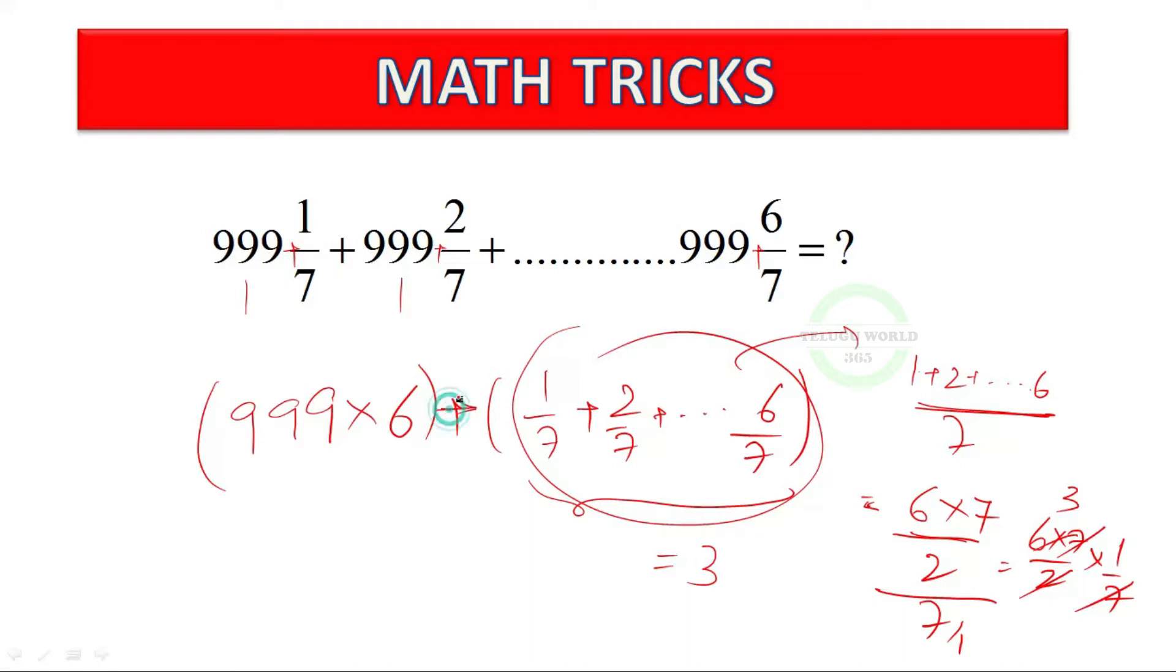The remaining part of the answer is plus. So multiplication with 9. 999 into 6 is the answer. So the answer is 5994. 5994 plus 3. The remaining 3 is the answer. So the answer is 5997.